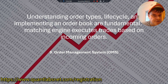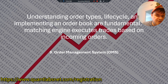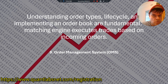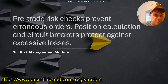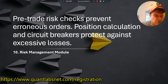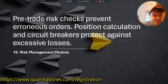Order management systems: understanding order types, lifecycle, and implementing an order book are fundamental. The matching engine executes trades based on incoming orders. The risk management module covers pre-trade risk checks to prevent erroneous orders. Position calculation and circuit breakers protect against excessive losses.